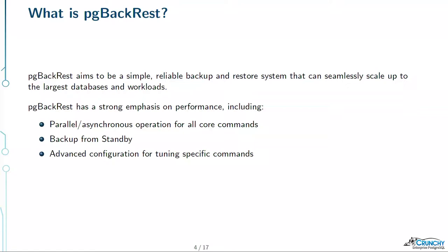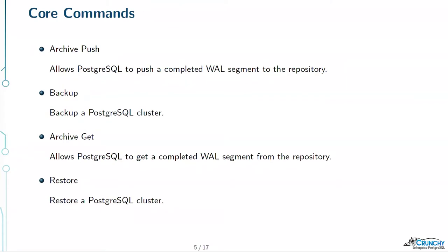PG Backrest has about 20 commands, but there are four big core ones. The first is archive push. This is the command that allows Postgres to push a WAL segment to the repository.